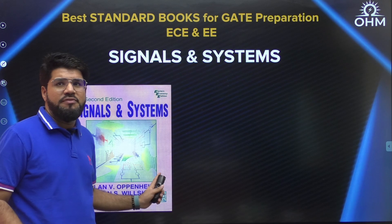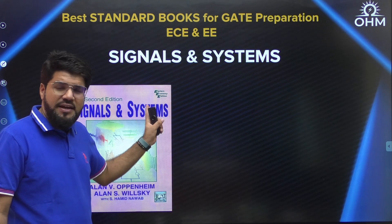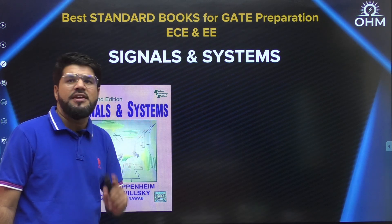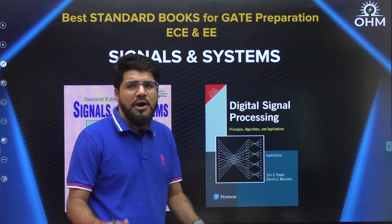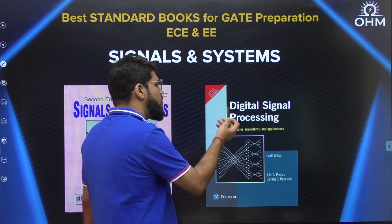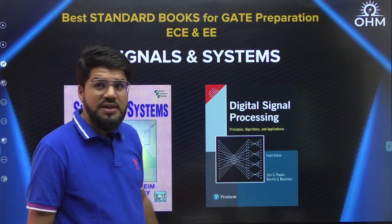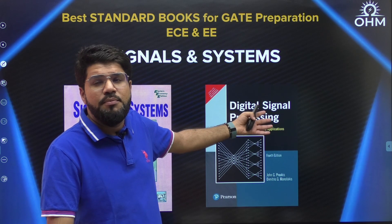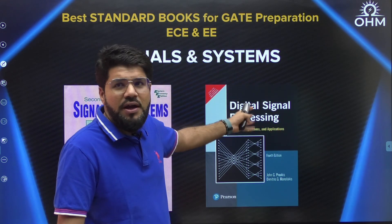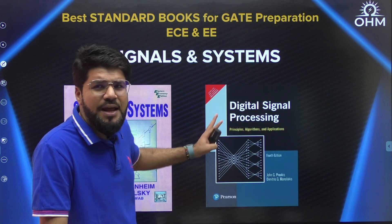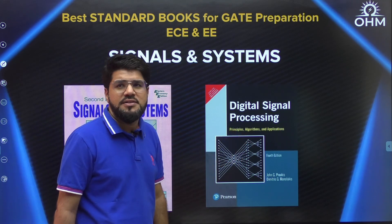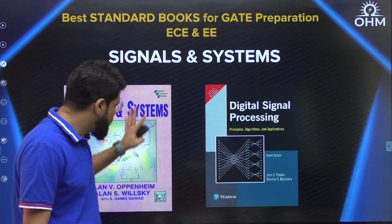Only DFT will not be found in Oppenheim and Willsky. You can find Z-transform, DTFT — everything about discrete signals is there, but DFT is not in this particular book. For DFT, you may refer to some YouTube videos or your class materials. Or if you especially want a book, you can go for the DSP by Proakis. This DSP book can be used for complete digital signal understanding — discrete convolution, DTFT, and Z-transform are also covered there. But I prefer following one book — only DFT is not there in Oppenheim, so for DFT, refer the DSP by Proakis.